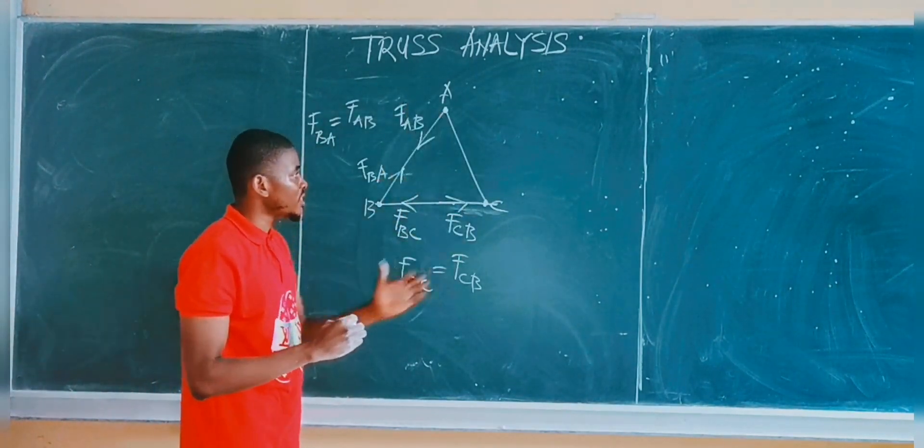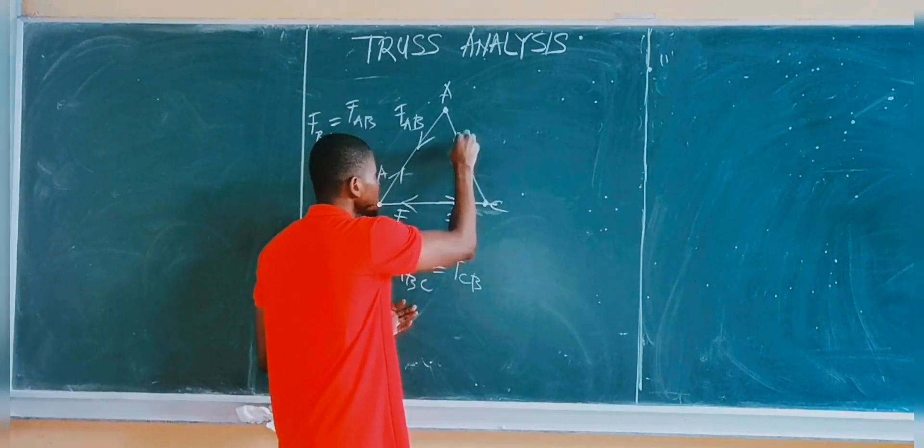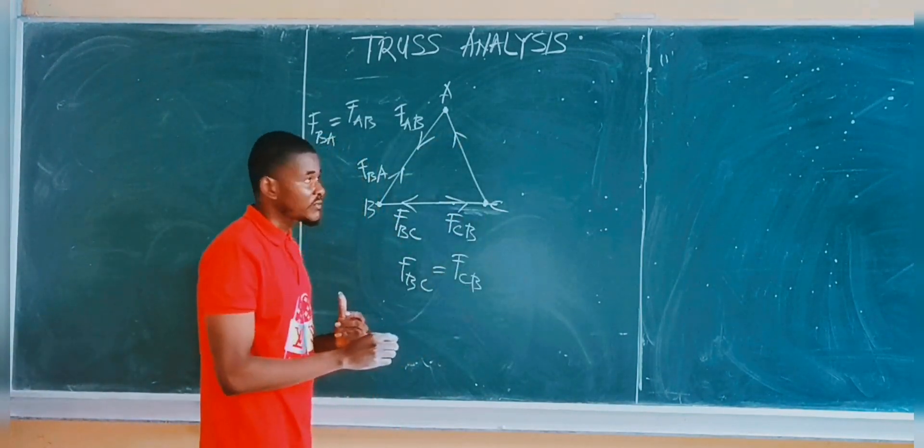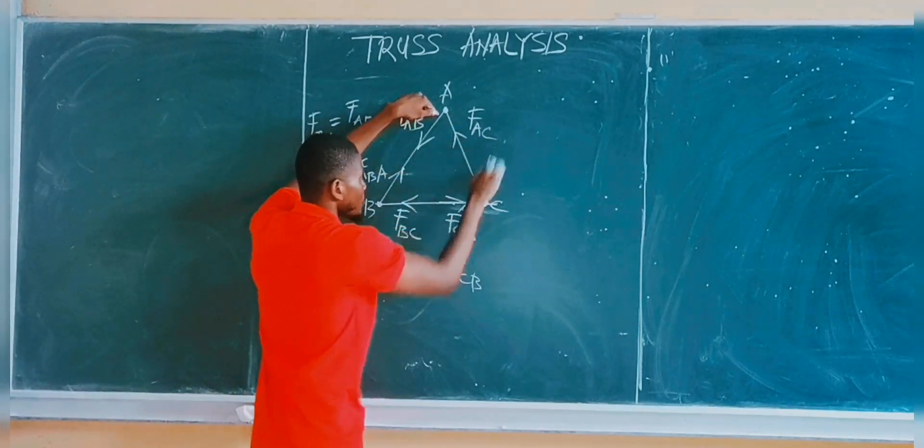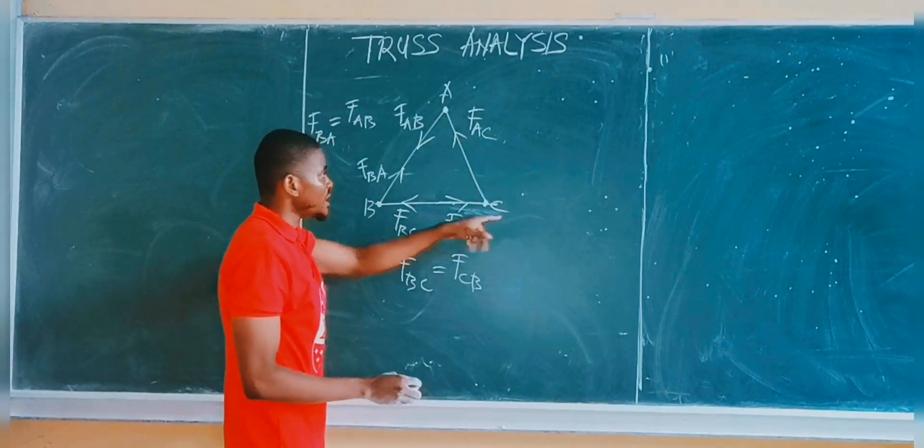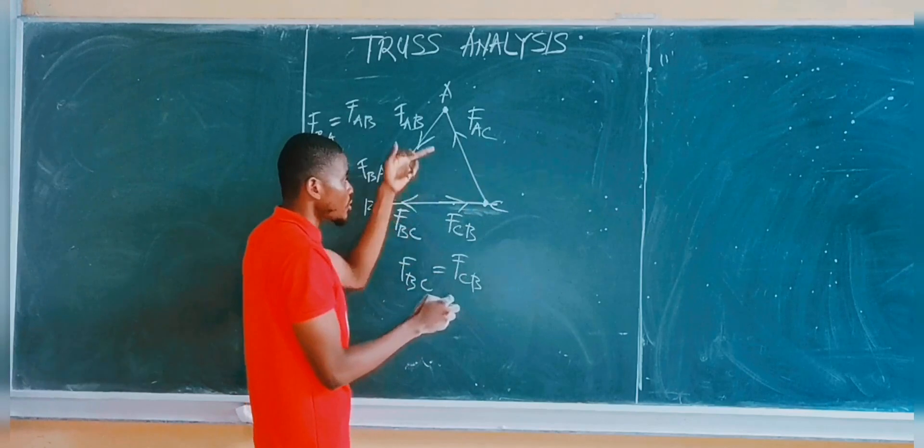Same thing applies to member AC. Considering member AC, let's say we have a force acting on C and this force is compressive. So this is called the force at joint A relative to joint C. That means the force acting on C is also going to be compressive.